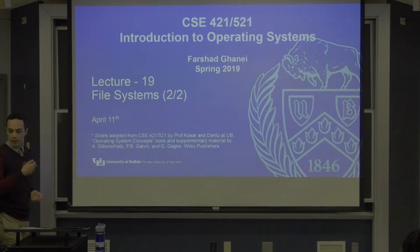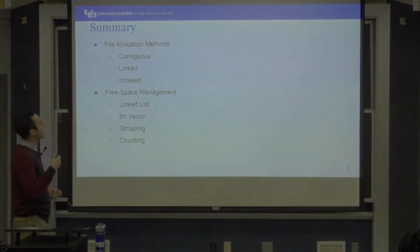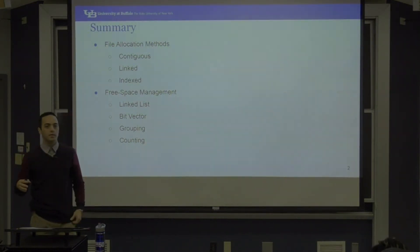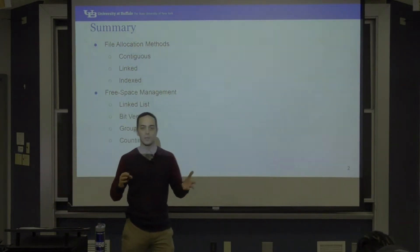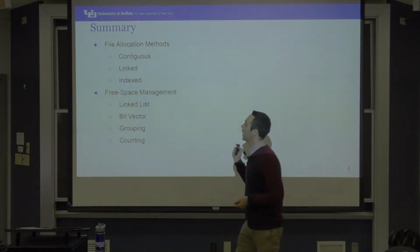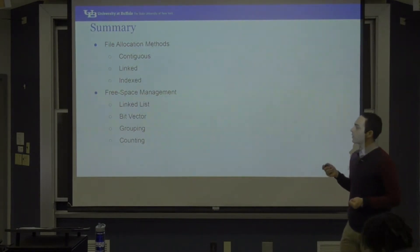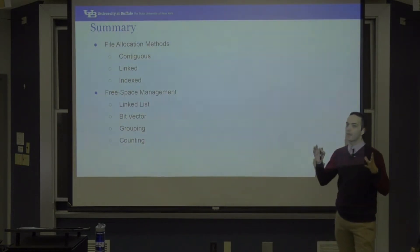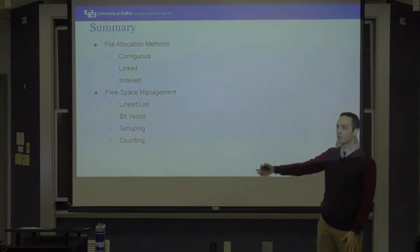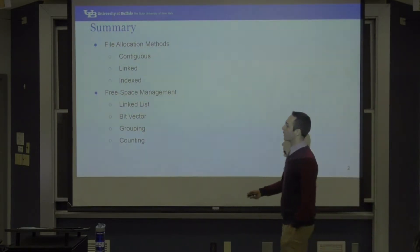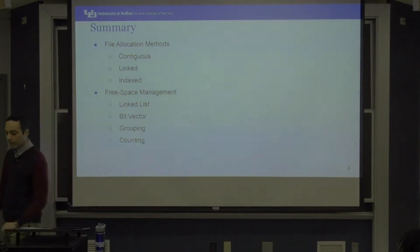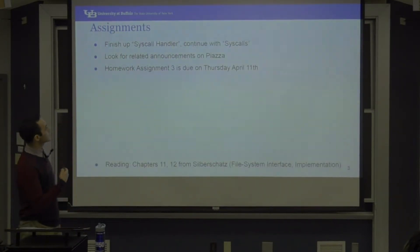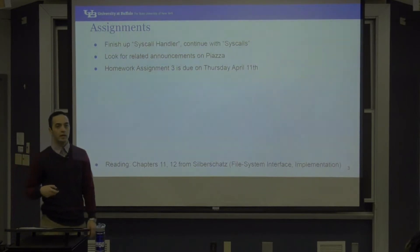We're going to continue on file systems today. Last session we talked about file allocation methods — we learned how the operating system allocates files on disk blocks with contiguous, linked, and index allocation methods. We also learned about free space management: how the OS manages free spaces and free blocks using linked list, bit vector, grouping, and counting.